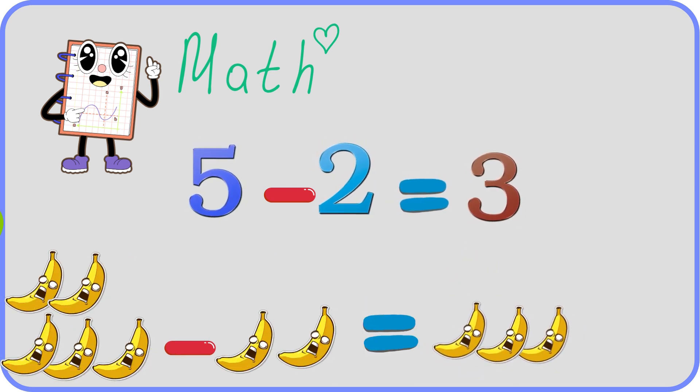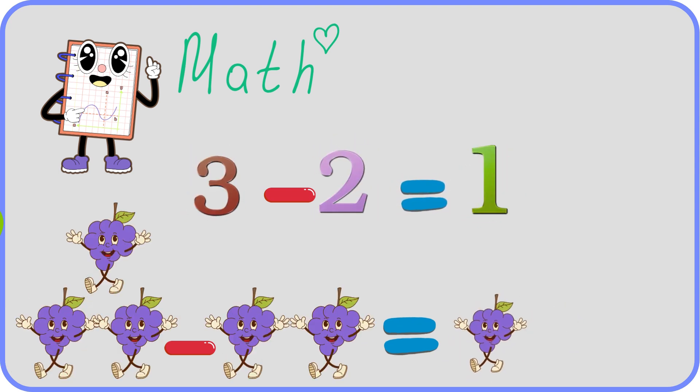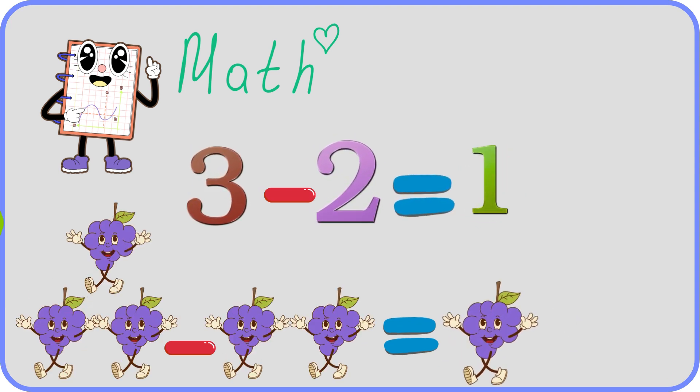Five minus two equals three. Three yellow bananas. Three minus two equals one. One funny grape.